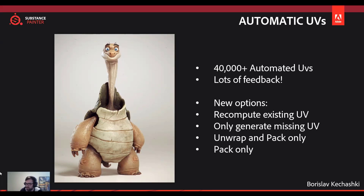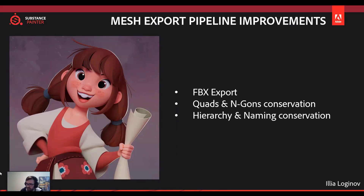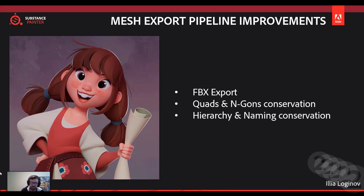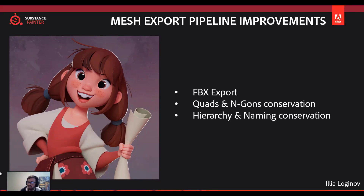Speaking of other technical improvements, there's a huge improvement to meshes. You can now easily export your mesh directly from Substance as either FBX, quads, or N-gon conversion — depending on what you want to do — and it will still maintain the same naming and hierarchy depending on which tool or mesh you're exporting.